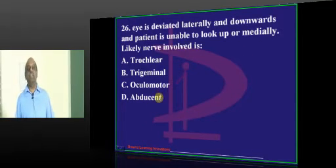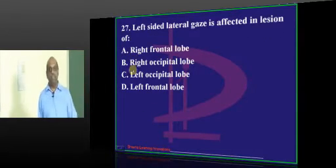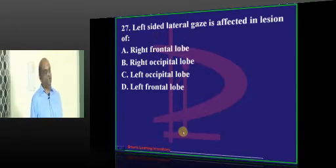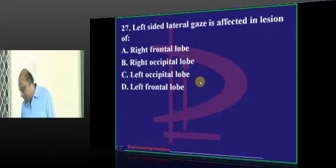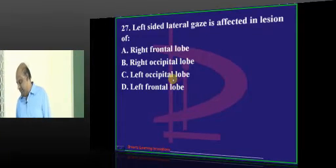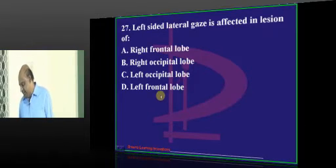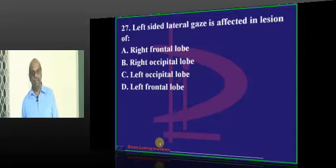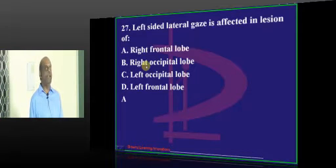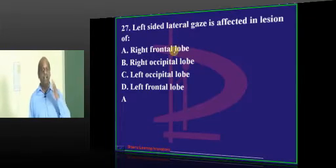Guntur gives the simplest answer: oculomotor nerve palsy — everyone should track this correctly. Now question 27: right occipital, left occipital, or frontal? Guntur says left frontal, Thirupati says right occipital. Karim Nagar agrees with Thirupati, but it is the right frontal lobe which controls left-sided lateral gaze.